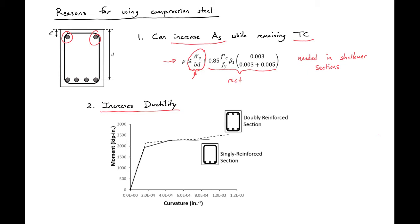Here are moment-curvature diagrams for both a singly reinforced and doubly reinforced section. The singly reinforced section can only achieve a certain amount of curvature at failure, while the doubly reinforced section will get an increased curvature, leading to increased capable deflections in our section. Note that adding compression reinforcement does not significantly increase our capacity — there is only a very small increase — so increased capacity is not one of our reasons for using compression steel.